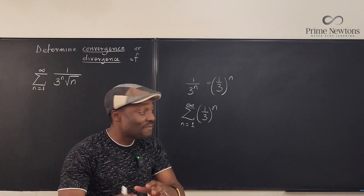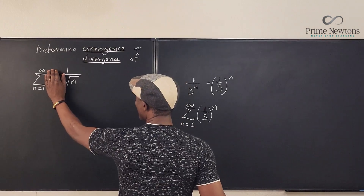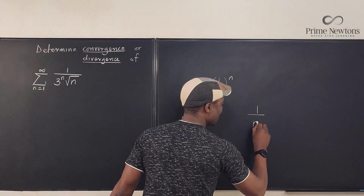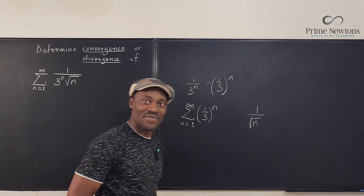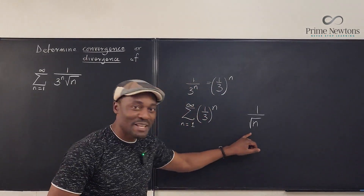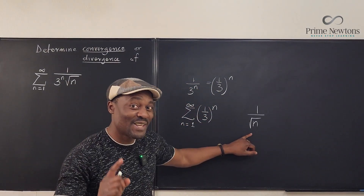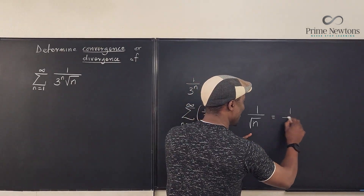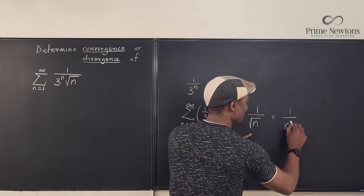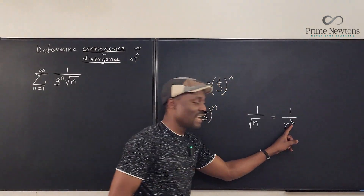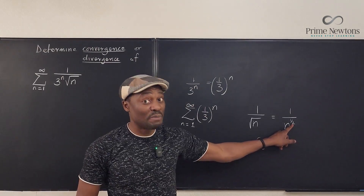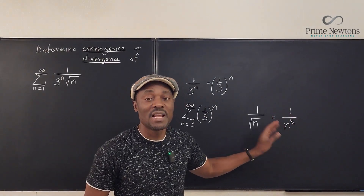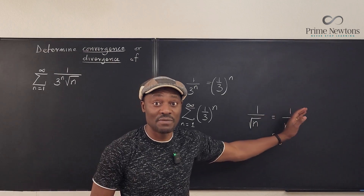But if you ignore the geometric part and what you had was 1 over n times square root of n, this is a p-series with p less than 1. This is the same thing as 1 over n to the 1/2. As you can see, this is less than 1, and for a p-series, if p is less than 1, it's going to diverge.